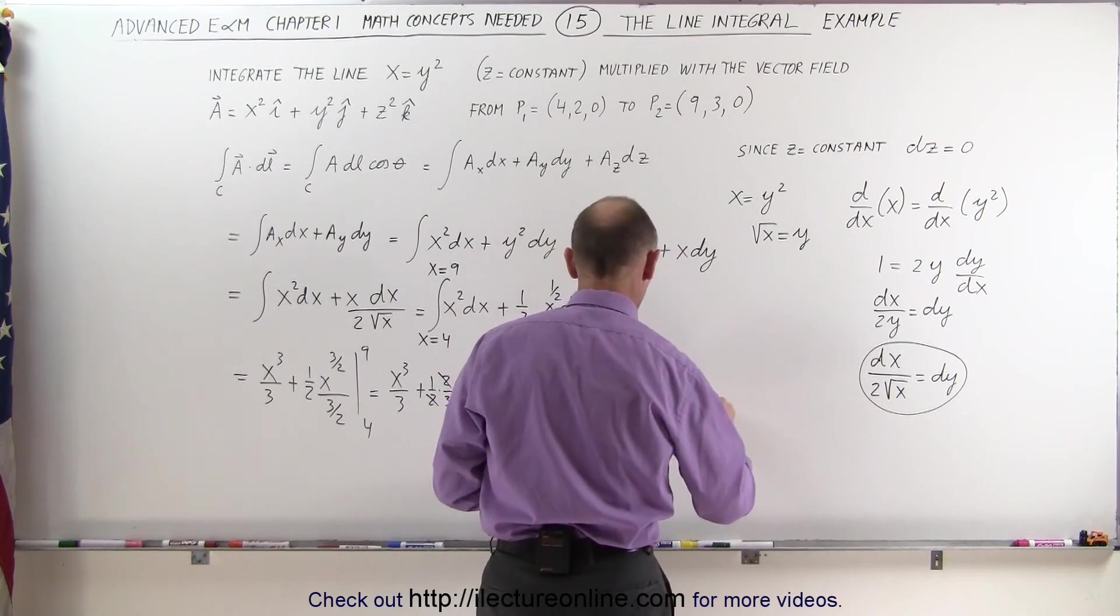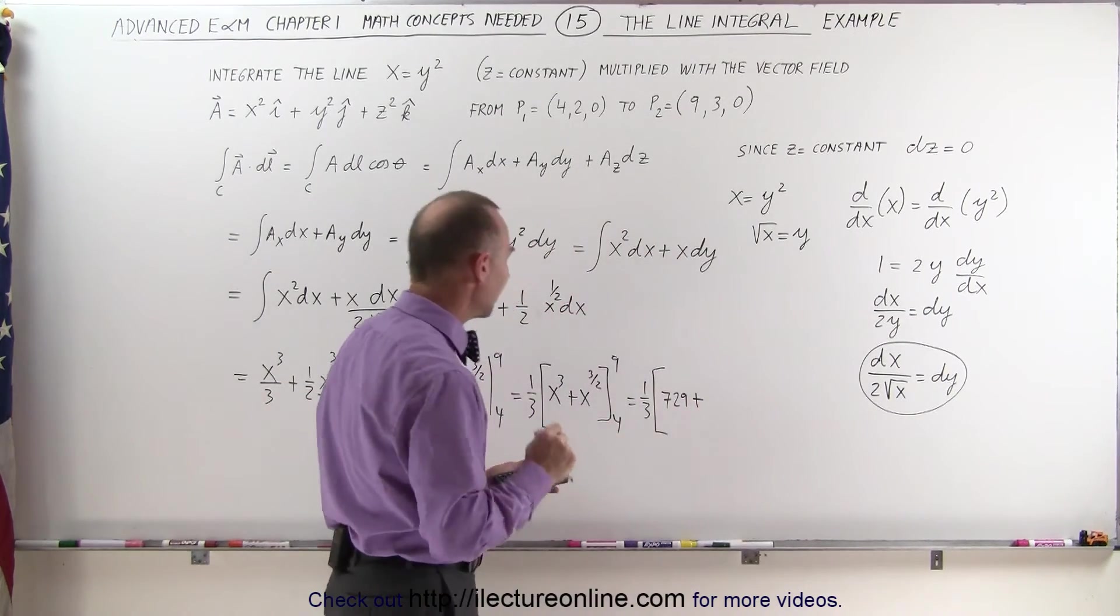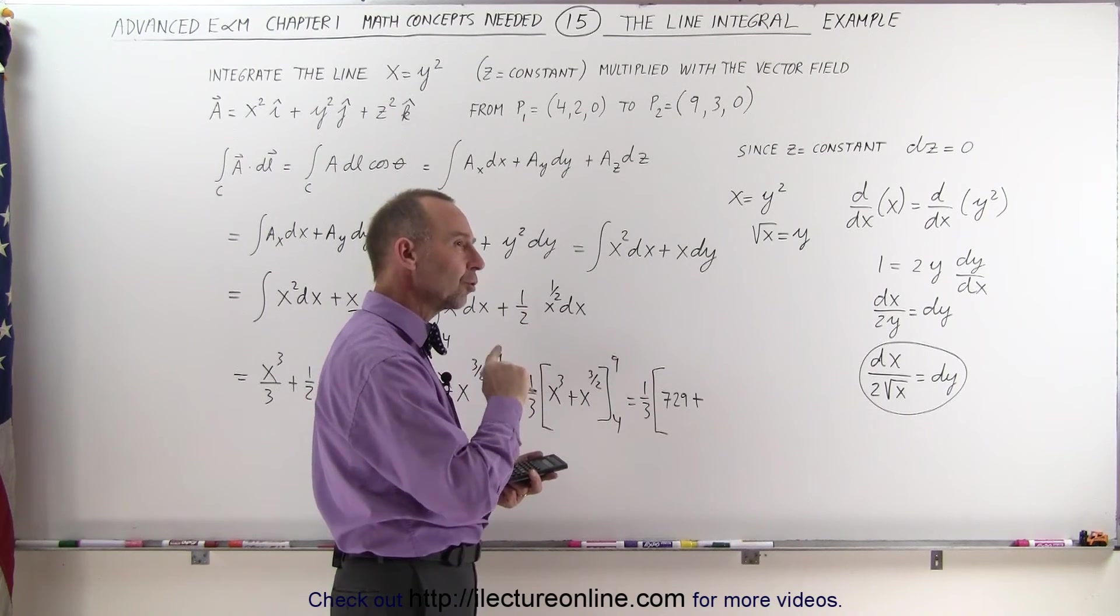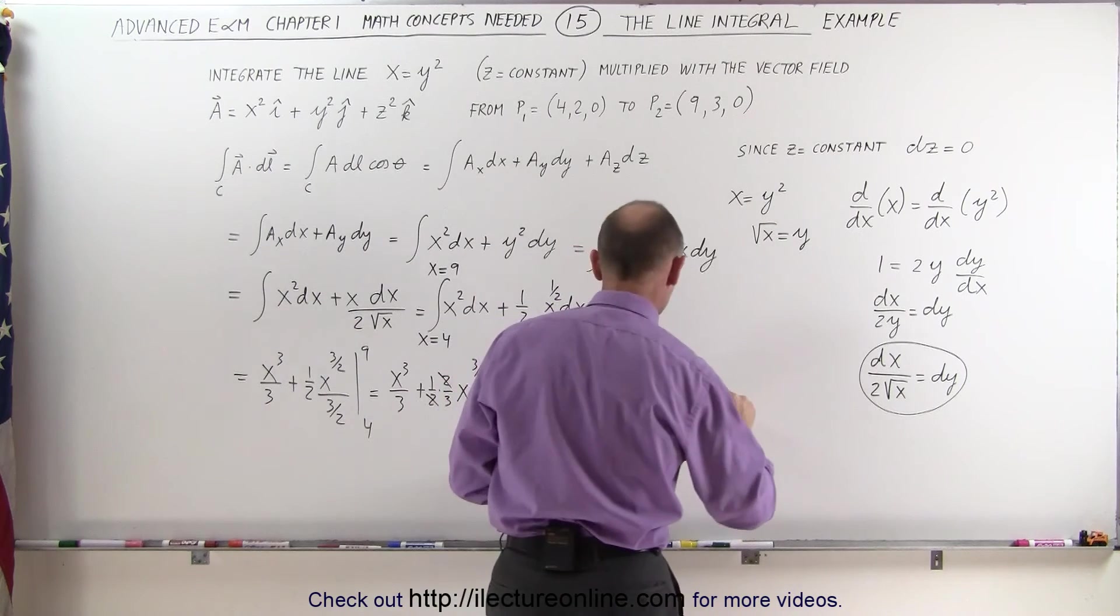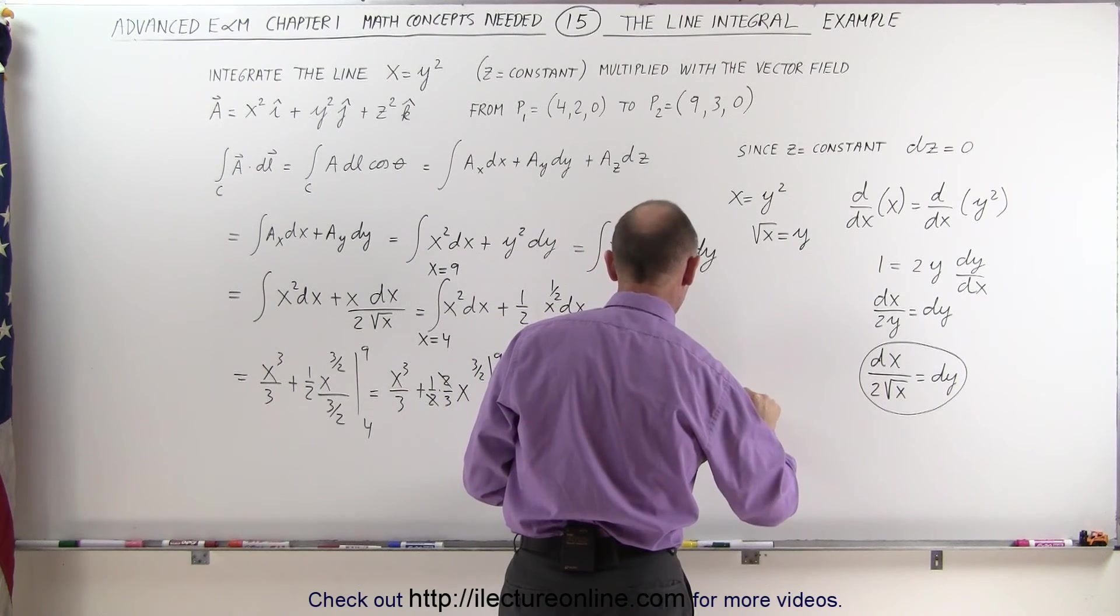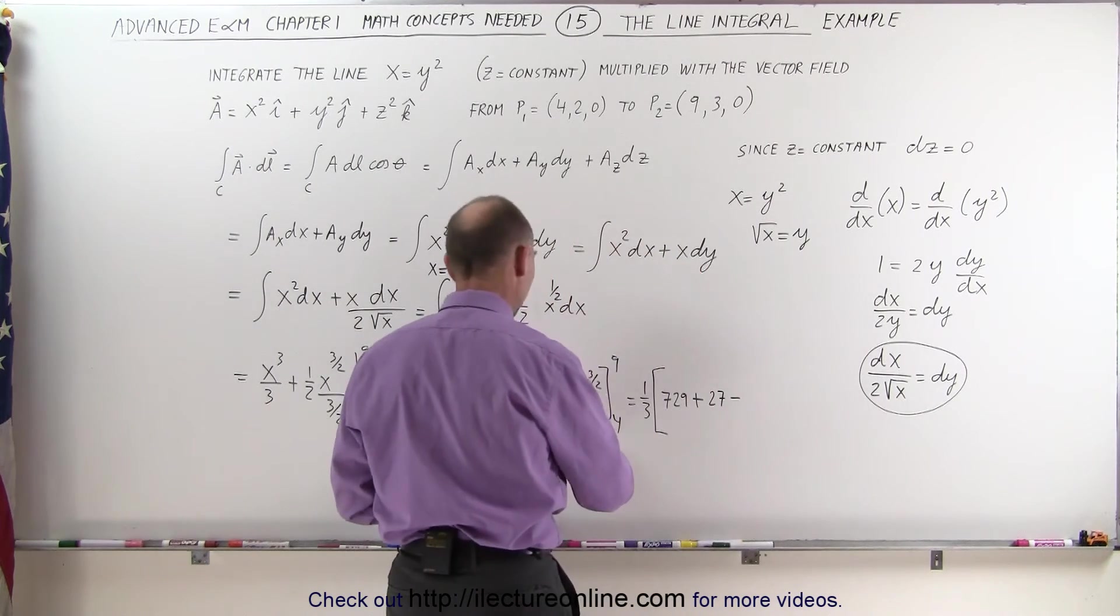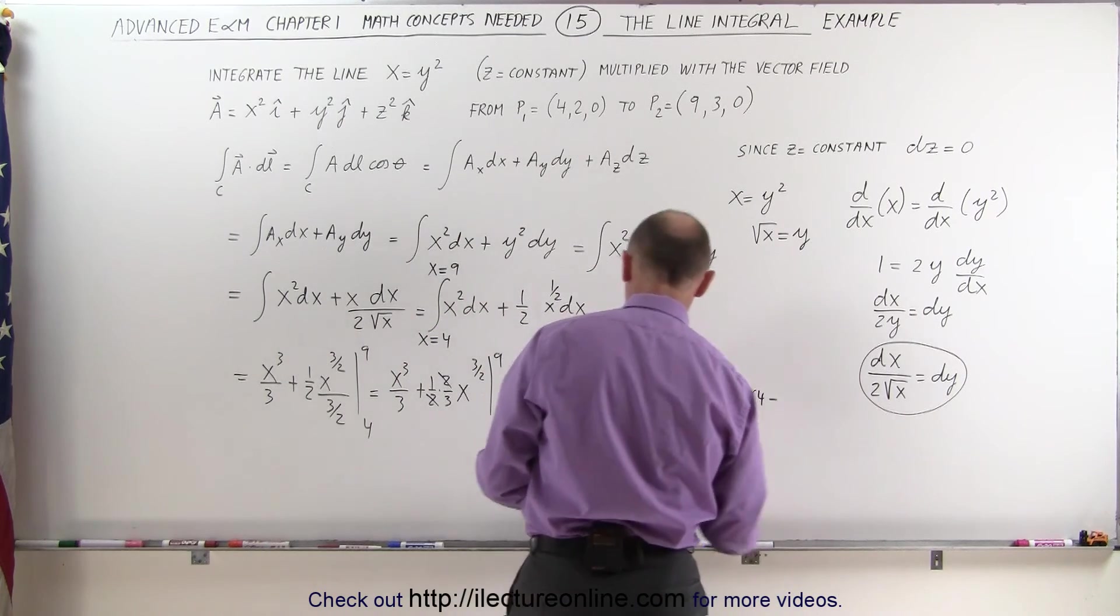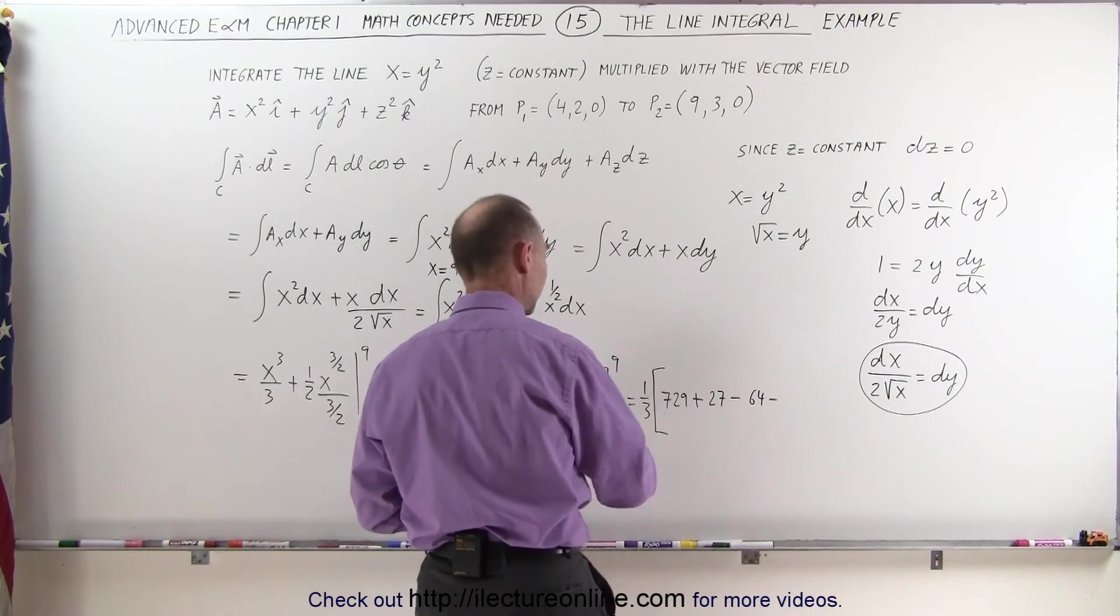729. Plus 9 to the three-halves. Well, that's the square root of 9 is 3 times 3 is 27, so plus 27. And subtract from that, when I plug in a 4, 4 cubed is 64, and then minus, when I plug in a 4, that's 2, that's 8.